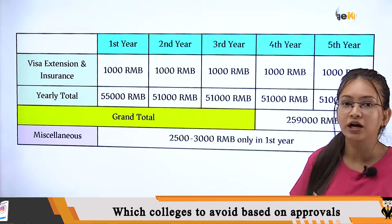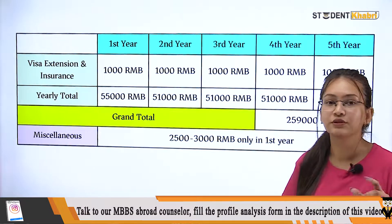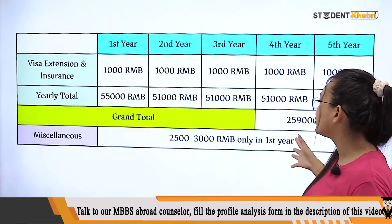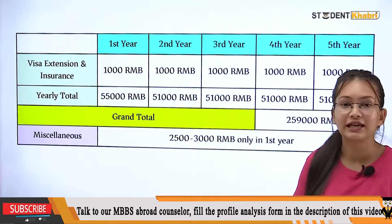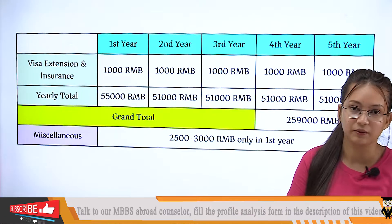So now if we do the total — you have to pay 55,000 RMB in the first year, and in the second, third, fourth, and fifth year you have to pay 51,000 RMB each year.